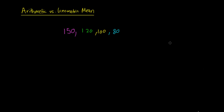Hey guys, so in this video we're going to have a look at the arithmetic mean versus the geometric mean. The means I'll denote with x-bar, and if I have the arithmetic mean I'm going to denote it with 'a', and if I've got the geometric mean I'm going to denote it with 'g'.